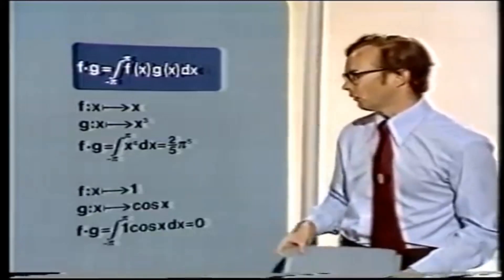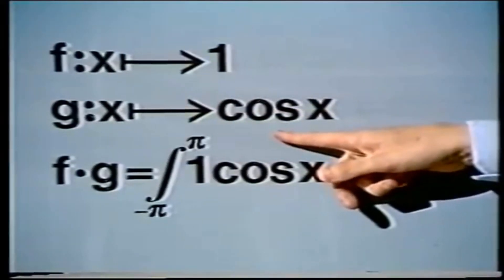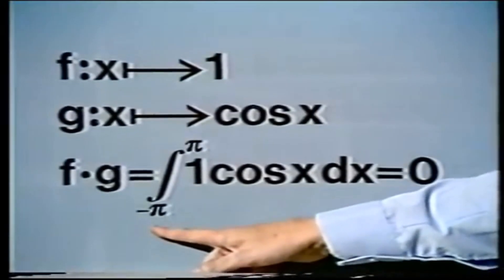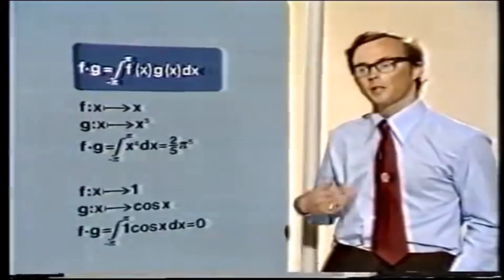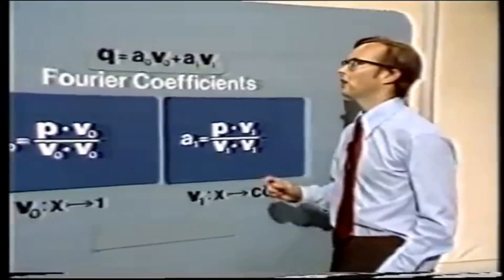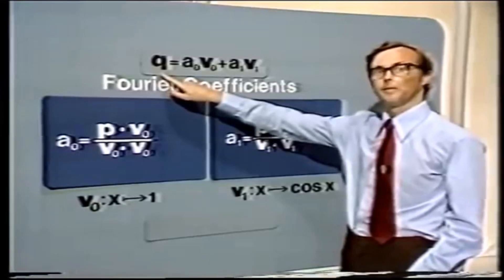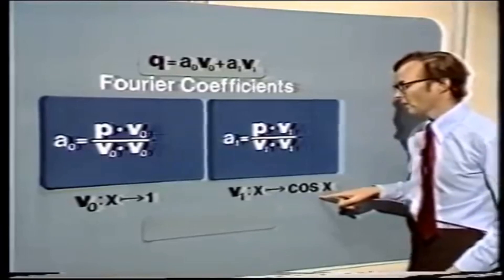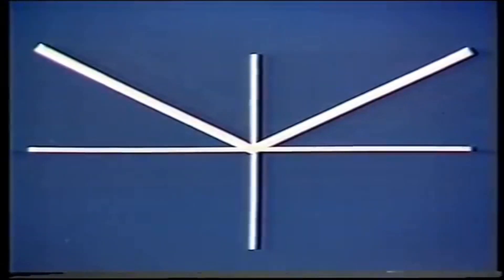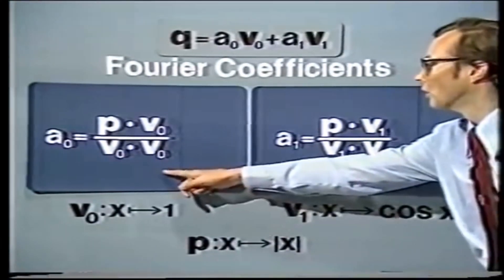An important example: if F is 1 and G is cos X, then these functions are orthogonal. Why? Because F dot G is the integral of 1 times cos X, and because we're integrating from minus pi to pi, this integral is just zero. So we can use the functions 1 and cos X as an orthogonal basis. They're orthogonal, so let's use them as our basis, with V0 = 1 and V1 = cos X. Remember, we've got to find the function Q which most closely approximates P, and for the function P we're going to take mod X — that V-shaped function you saw at the beginning of the program.